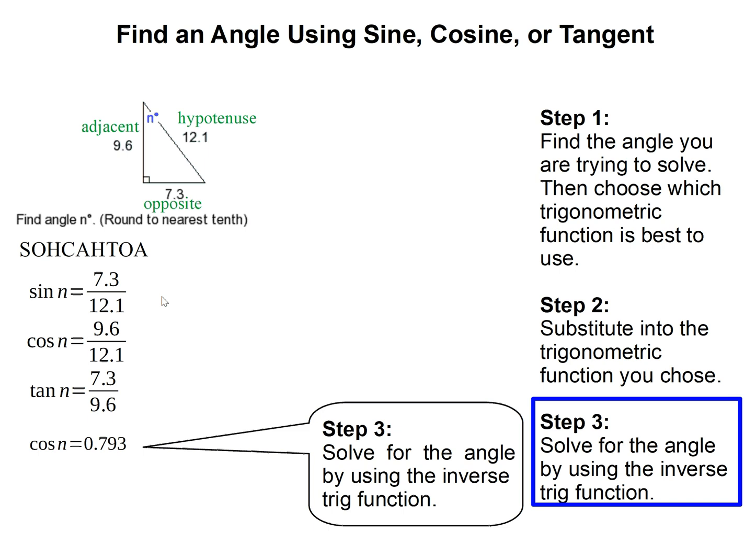It says solve for the angle by using the inverse trig function. When you're here, you need to solve for n. So how do you do that? You want to get rid of cosine, so you've got to do the opposite of cosine. Just like if you have plus one, you do minus one. If you have times three, you divide by three.